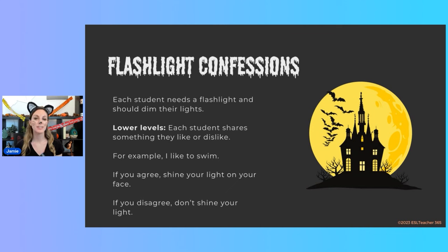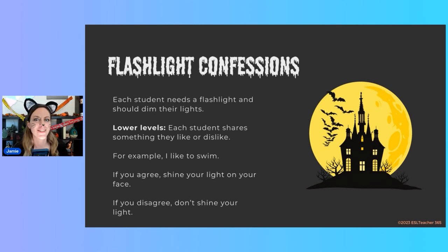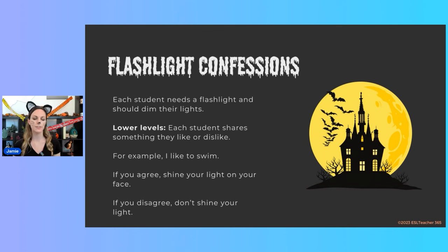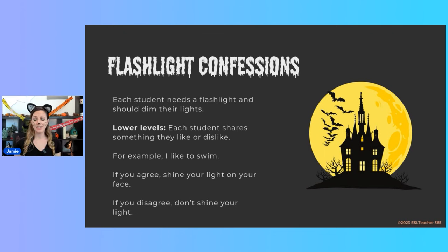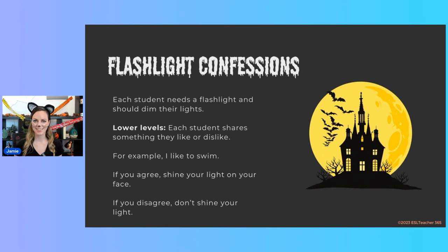For the last game we're going to look at how we can play a similar game for three different levels — Flashlight Confessions. For each version your students will need a flashlight or their phone to light up their face. For lower levels, have them share something they like or dislike — for example, I like to swim. The other students listen, and if they agree they light up their face; if they disagree they won't use their flashlight.